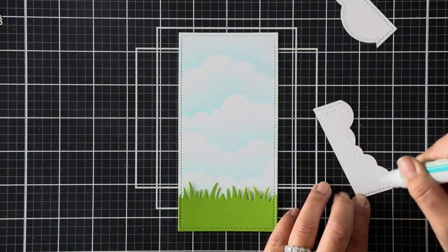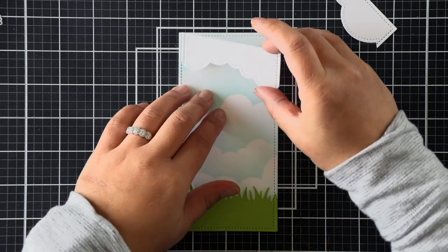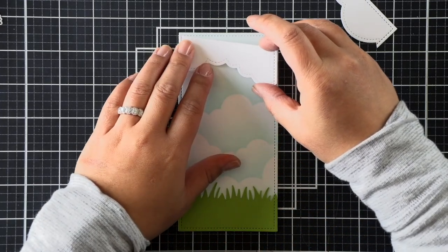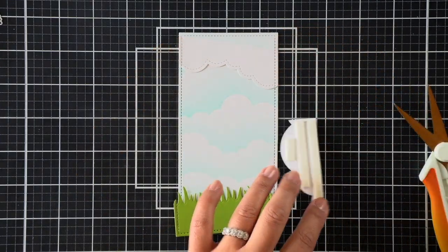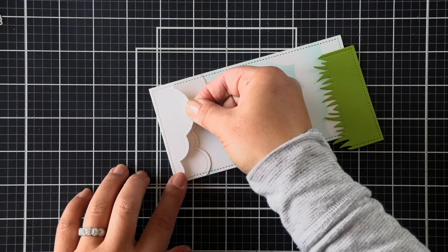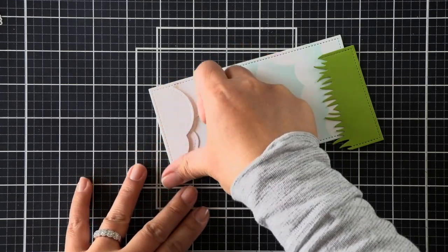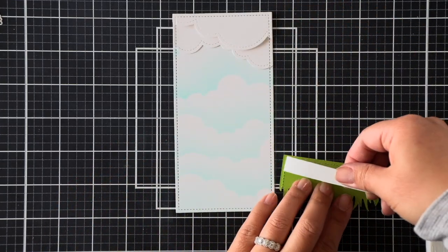For the bottom most layers, I'm going to attach with liquid adhesive, and then for the top most layer, I'm going to attach it with foam adhesive to give it more dimension. So I've done that with the clouds, and then I'll repeat that with the grassy border.